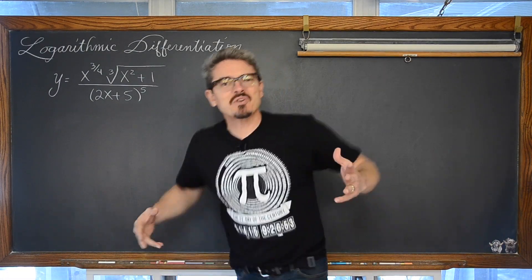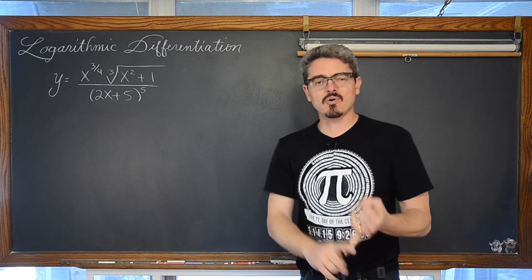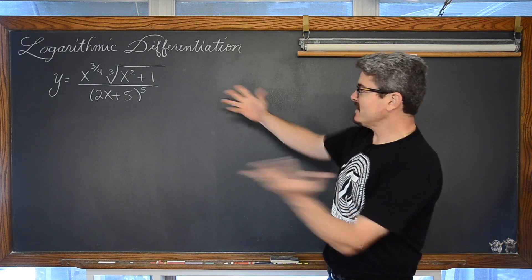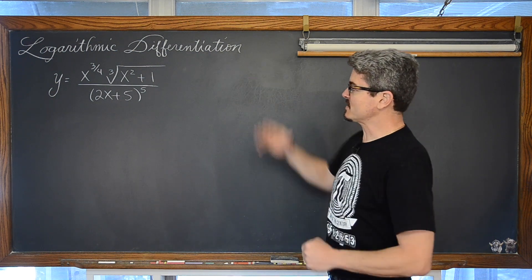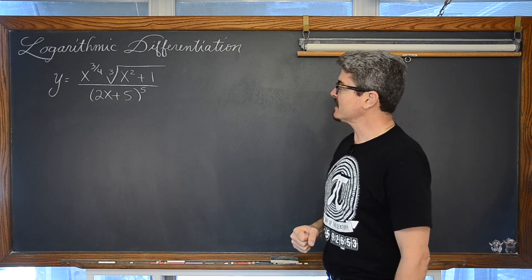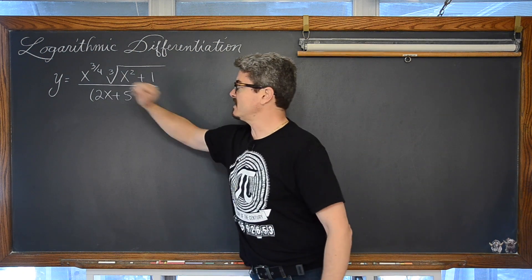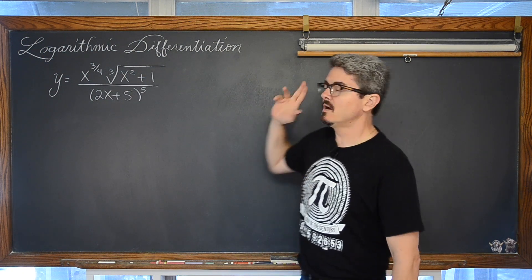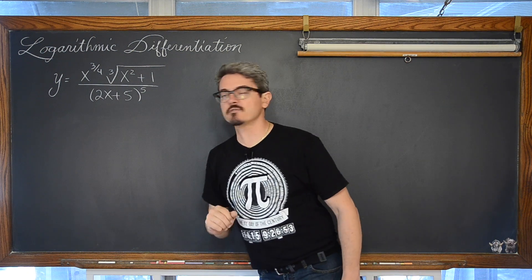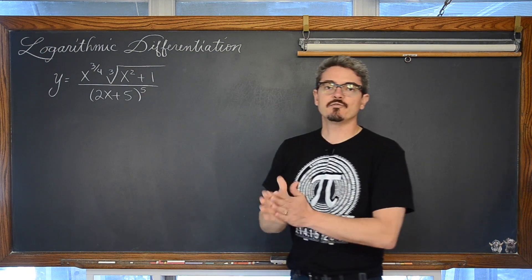BAM! Mr. Tarrou! So you are doing your calculus homework, practicing your product and your quotient rule, and then you end up with a problem like this, which is y equals x to the 3/4 power times the cube root of x squared plus 1 all divided by 2x plus 5, all that raised to the fifth power.